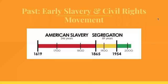A timeline shows us where things happen — it's a way to show us the passage of time. Over here in the red, that went all the way back to 1619. And over here in the green is 2000. So from 1619 up to 1865, for 246 years, that is when it was legal to have slaves in America — that was American slavery.